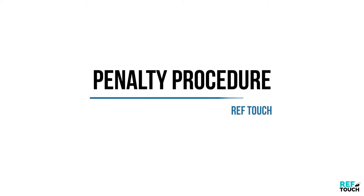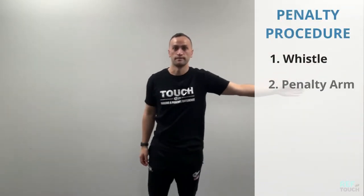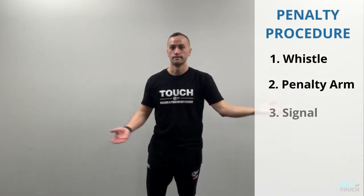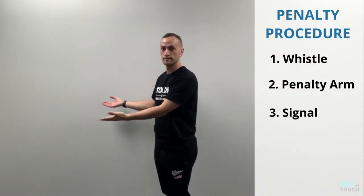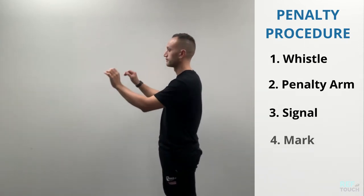Kia ora whanau. In this video we'll break down the penalty procedure. There are five parts of the procedure: the whistle, penalty arm, the signal, the mark, and 10 metres.